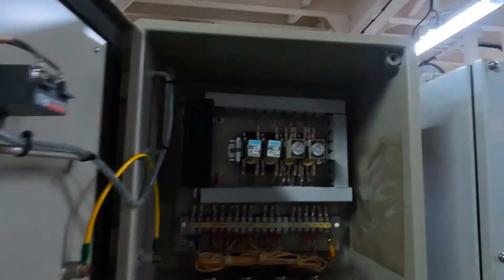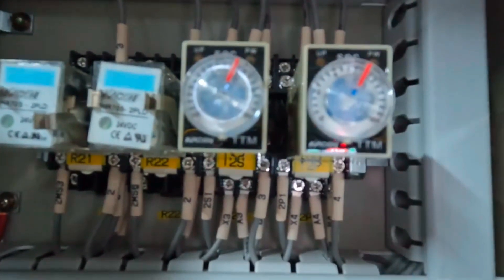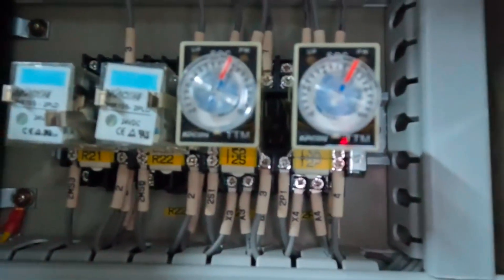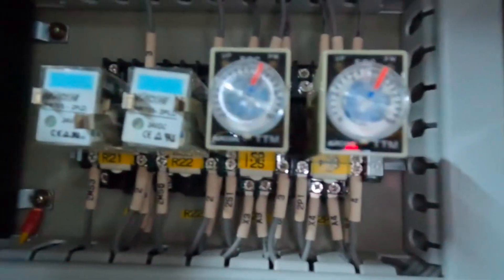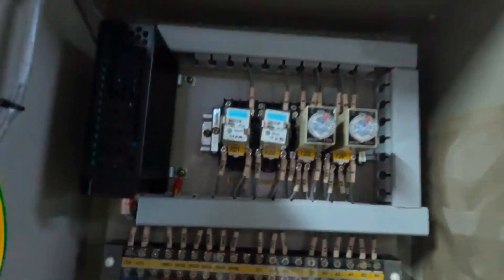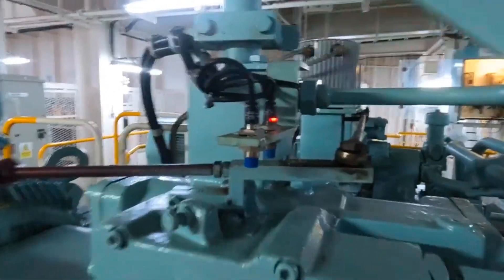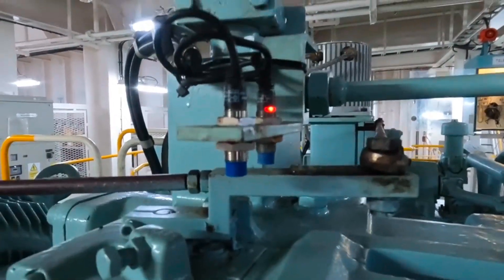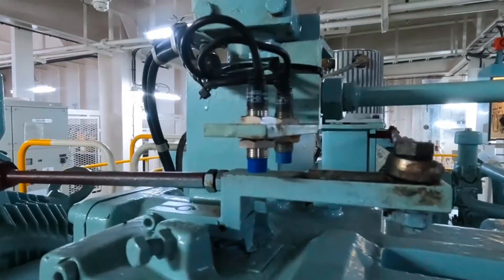Here we can see there are two timers and two relays - one for port and one for starboard. Whenever the sensor detects the rudder movement, the sensor light will glow. Now the command is given for starboard side and we can see the light is glowing.